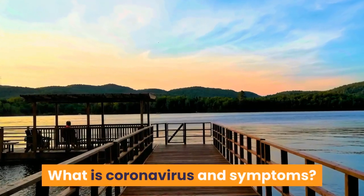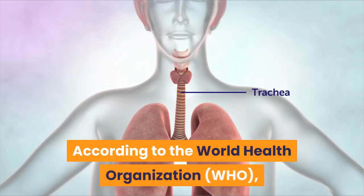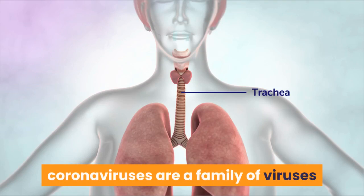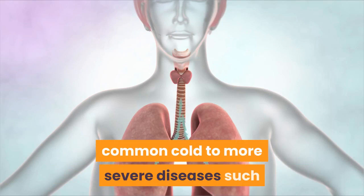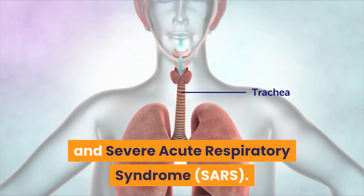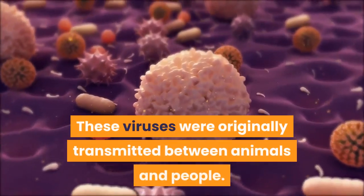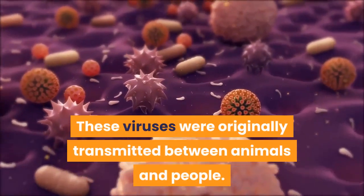What is Coronavirus and Symptoms? According to the World Health Organization, coronaviruses are a family of viruses that cause illness ranging from the common cold to more severe diseases such as Middle East Respiratory Syndrome and Severe Acute Respiratory Syndrome. These viruses were originally transmitted between animals and people.